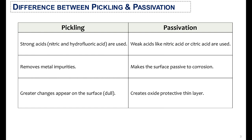The difference between pickling and passivation is that in pickling treatment, strong acids like nitric acid and hydrochloric acid are used, while during passivation, weak acids like nitric acid or citric acid are used. During pickling, metal impurities are removed, while passivation makes the surface passive to corrosion. Also, during pickling there are great changes on the surface and it becomes dull, while during passivation a protective thin layer of oxides appears on the metal surface.